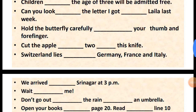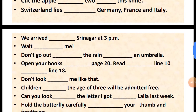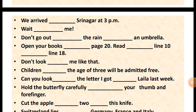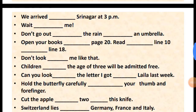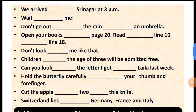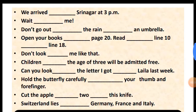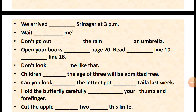Now, we arrived at Sreenagar at 3 p.m. — or it can be 'we arrived in Sreenagar at 3 p.m.' This is actually a preposition of no dimension. So, we arrived at Sreenagar or we arrived in Sreenagar at 3 p.m. Next: Wait for me — this is an abstract one.